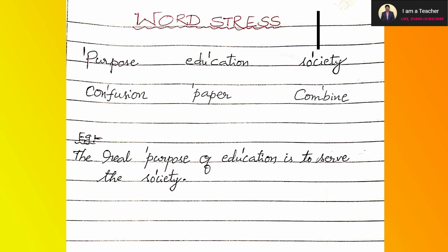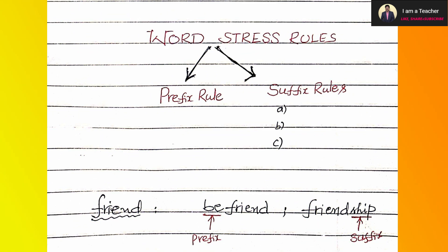There are some rules regarding word stress, and we are going to study those rules now. Word stress rules can be divided into two types: prefix rules and suffix rules. A letter or group of letters which comes before another word is called a prefix. If it comes at the end of a word, it is called a suffix. For example, in 'befriend', 'be' is the prefix. In 'friendship', 'ship' is the suffix and 'friend' is the root word.